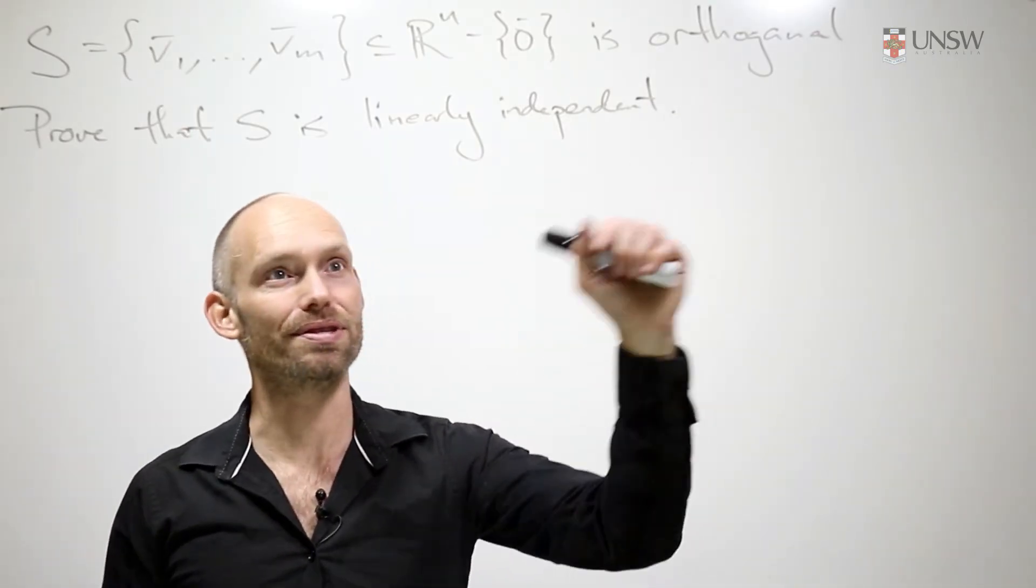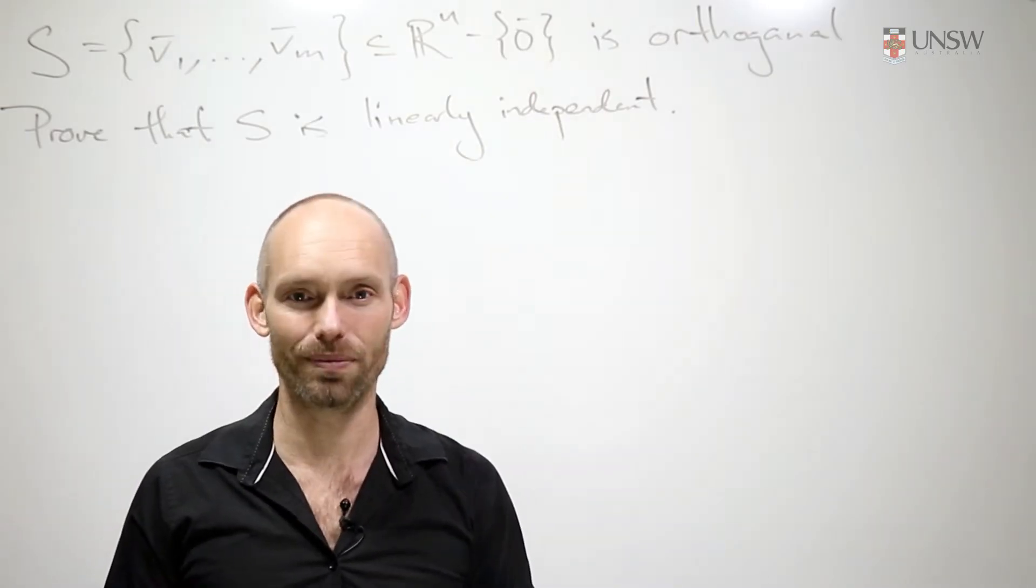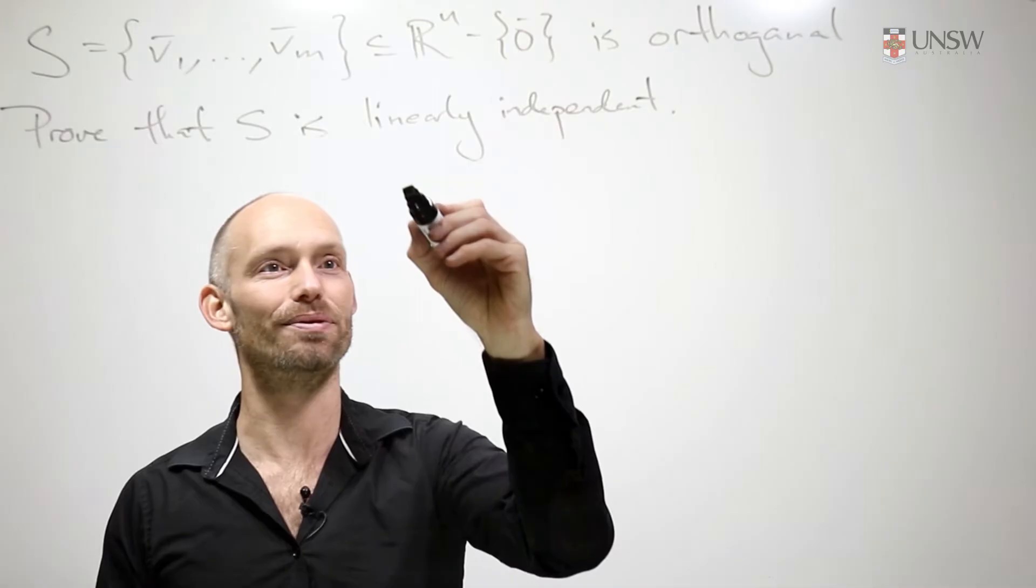Now, if we have such a set, then apparently it's linearly independent. That's what we have to prove, so let's prove this. Proof.